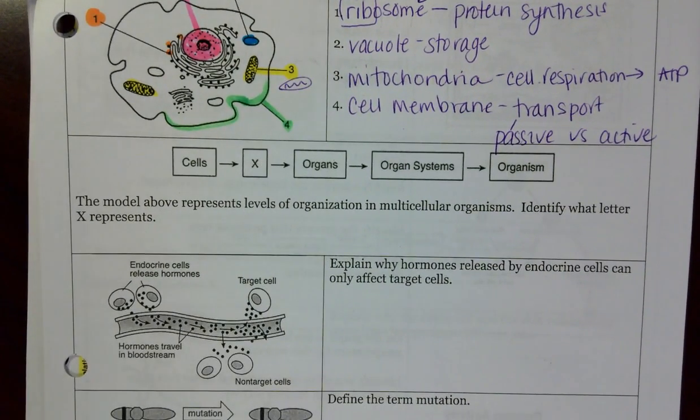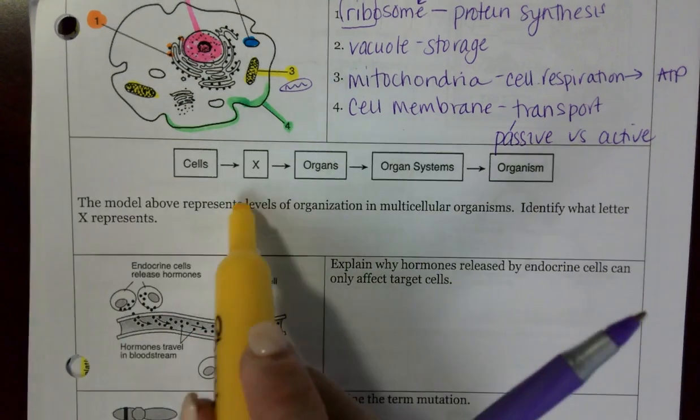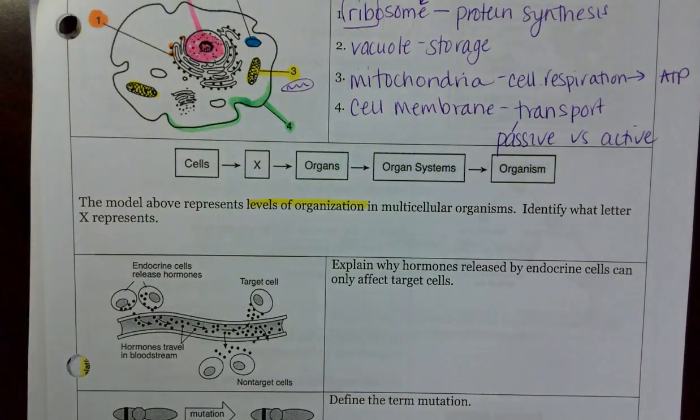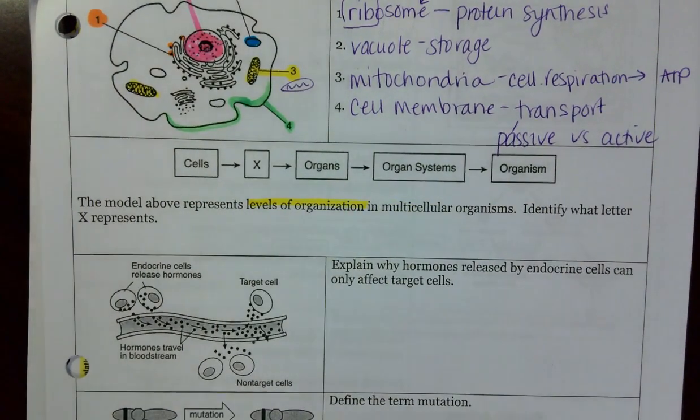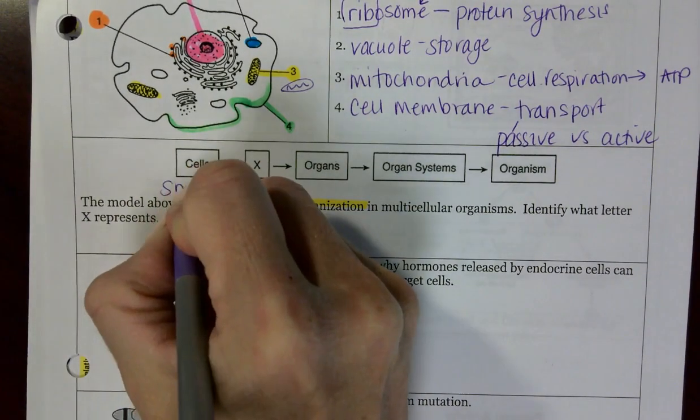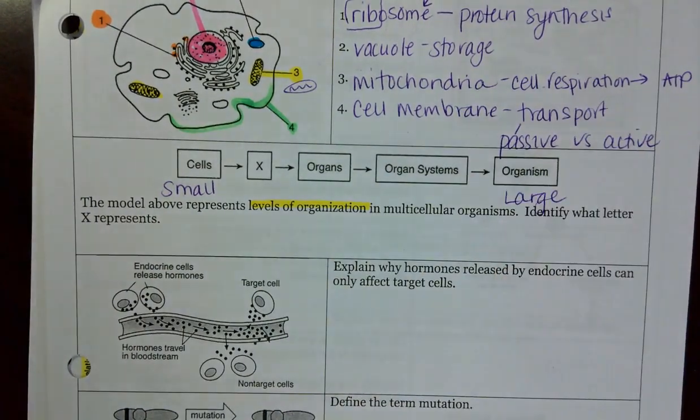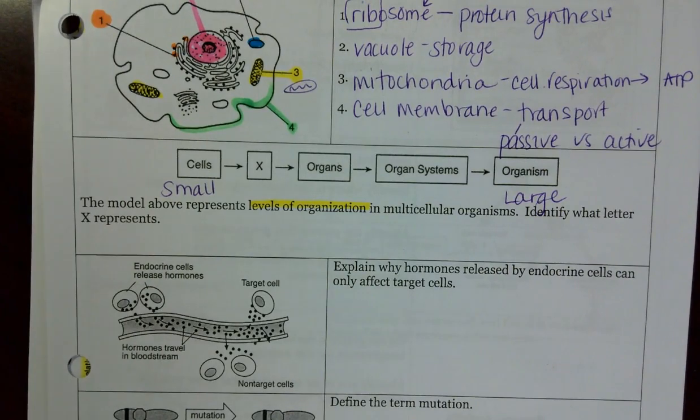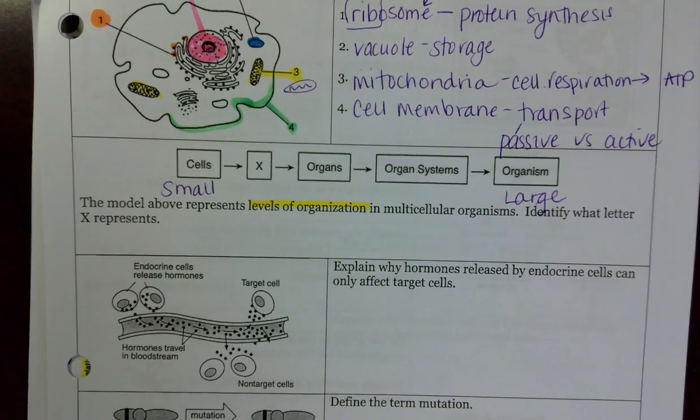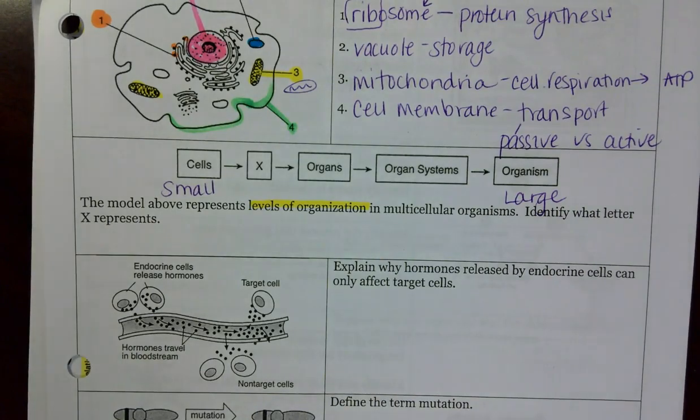Now, one thing that I find my students struggle with quite a bit is going to be this levels of organization. The levels of organization, frequently on the regions, they have you organize them from smallest to biggest or from biggest to smallest. We're going based on living things. So the smallest living thing is going to be made up of just one cell. On this side, I would note that this is small, and then the organism is going to be large. Sometimes, instead of using general terms, they use more specific terms. Maybe it'll say plant cell, and then the organism would be an oak tree. And an organ would be a leaf.